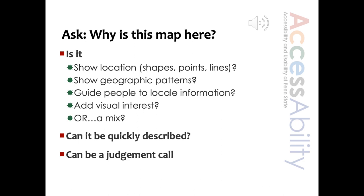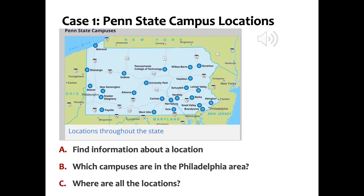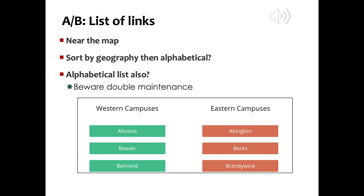Penn State has over 20 locations throughout the state, and here's a map of all of them. Below are some questions a viewer might be asking. On the page with the map is a set of text links for each campus. Note that they are sorted roughly by geography, east versus west. An alphabetical list could also be maintained, but it's important to be mindful of double maintenance. Sometimes campuses do get new names.